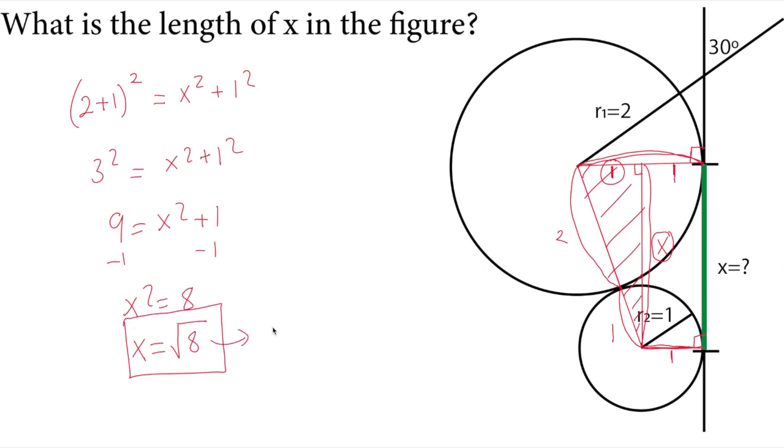If you simplify this, square root of eight can be written as square root of four times two, and four will get out of the square root as two. So two square root two is also correct for this solution.